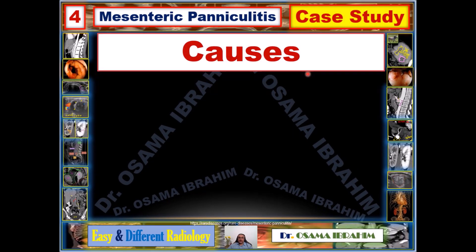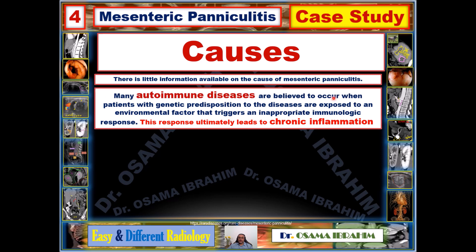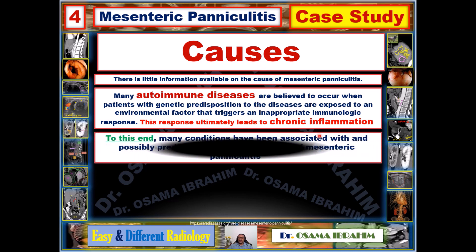There is limited information available on the causes of mesenteric paniculitis. However, autoimmune diseases are believed to occur when patients with a genetic predisposition are exposed to an environmental trigger, causing an inappropriate immunological response that ultimately leads to chronic inflammation. Autoimmune disease is therefore considered one of the most important causes of mesenteric paniculitis.